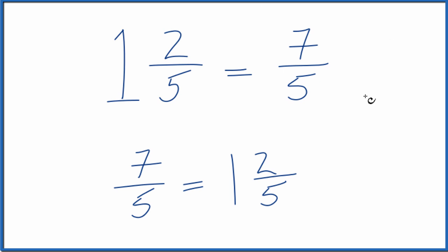This is Dr. B, converting the mixed number 1 and 2 fifths to an improper fraction. The answer? 7 fifths.